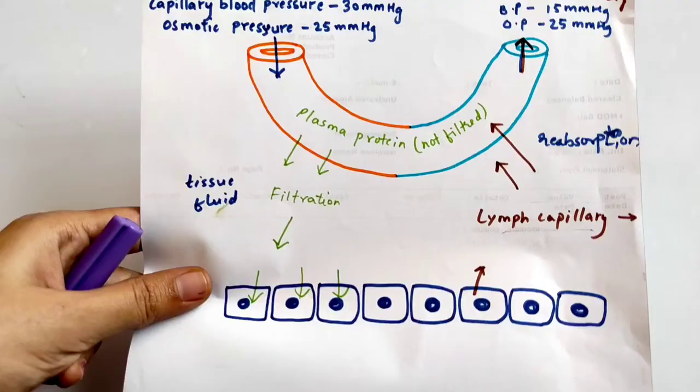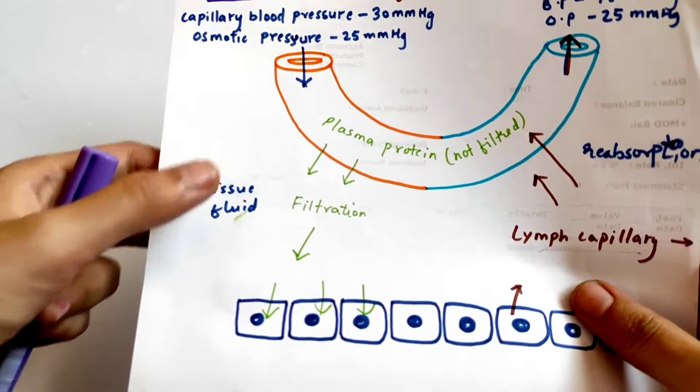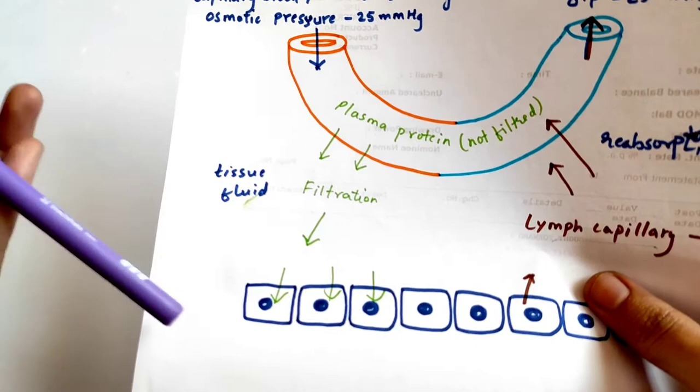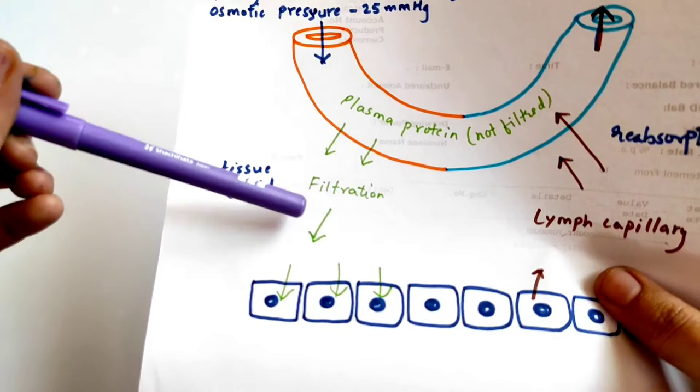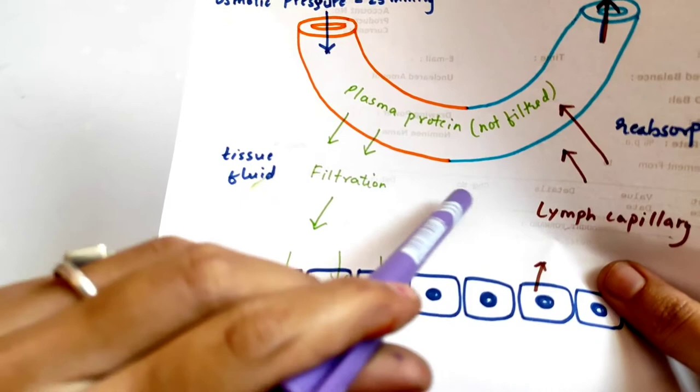This is our blood capillary, and these are our tissues, which we have to supply with oxygen and nutrients. The capillary supplies oxygen and nutrients through the process of osmosis. But if the fluid accumulates in this interstitial space, then we call it edema.